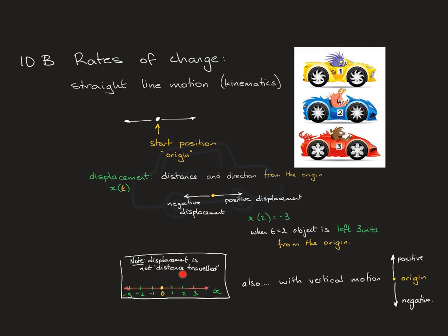Displacement is not the total distance traveled — it is how far the object is from the origin. For example, starting at the origin: displacement is 1, then going back gives displacement 0 but a total distance traveled of 2 units; displacement −1 means total distance traveled is 3 units; displacement −2 means total distance traveled is 4 units. Displacement and distance are not the same thing — displacement is always how far you are from that fixed origin point.